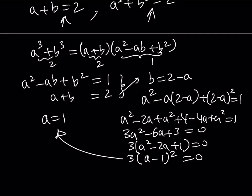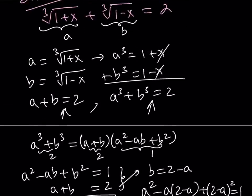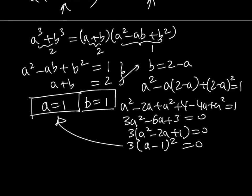But, again, we're not looking for A, we're looking for X. So, how do you find X from here? Well, if A is equal to 1, that implies that B is also equal to 1, because A plus B is equal to 2. And then now let's go back and back substitute. A is equal to cube root of 1 plus X.